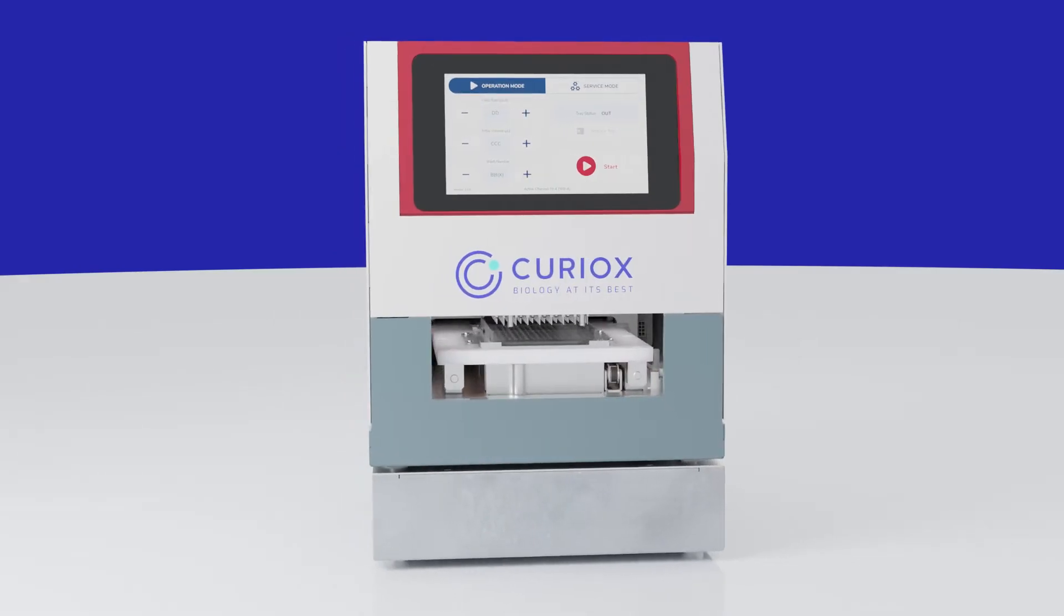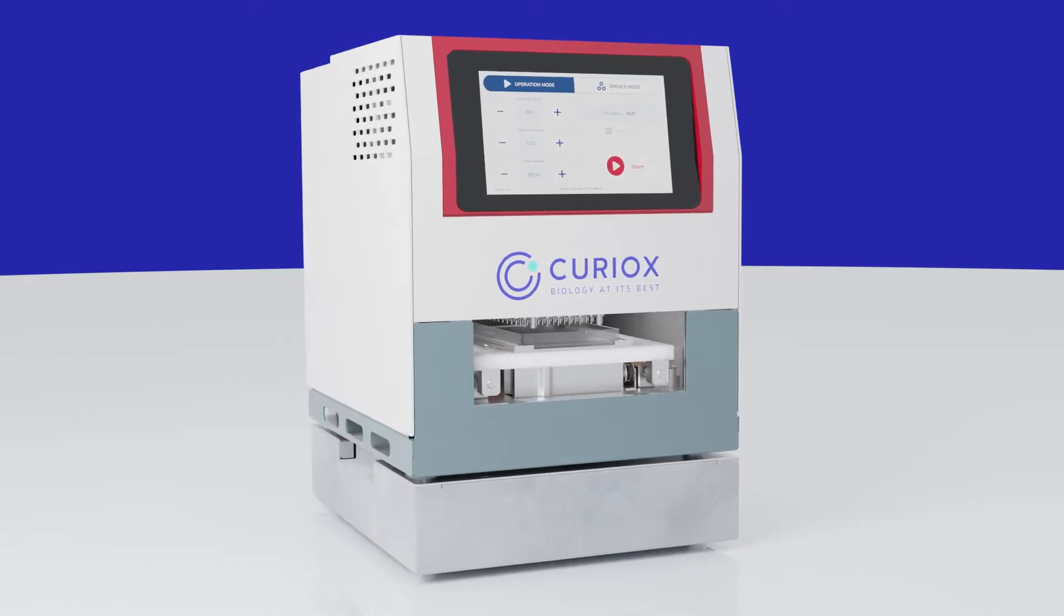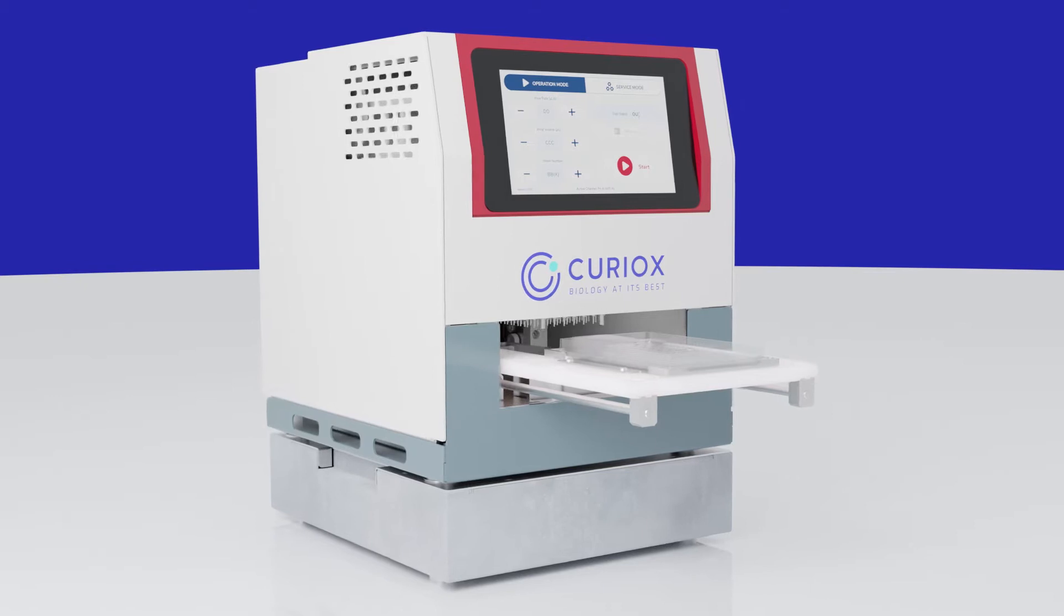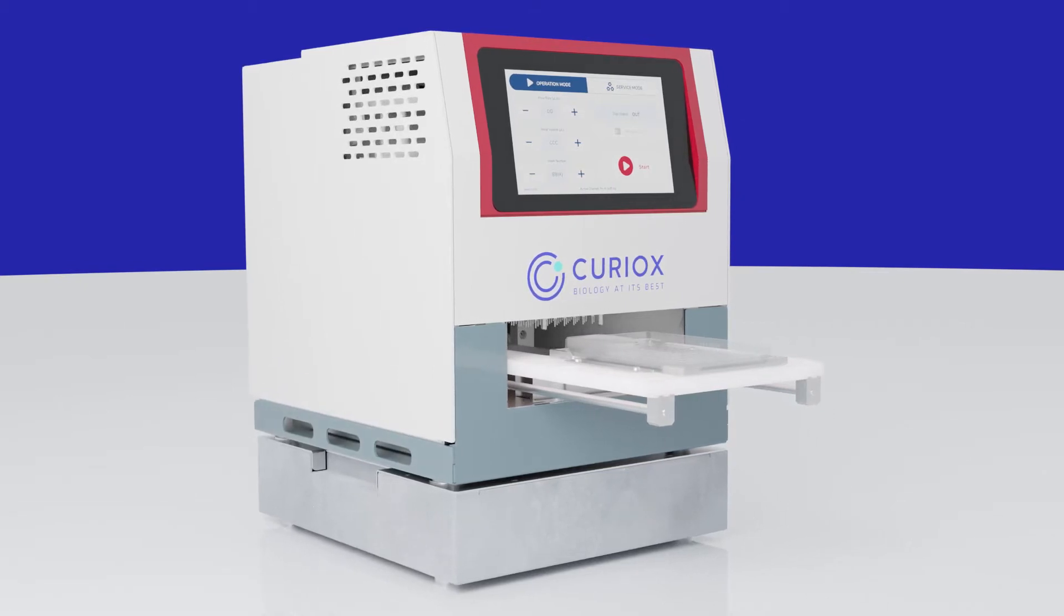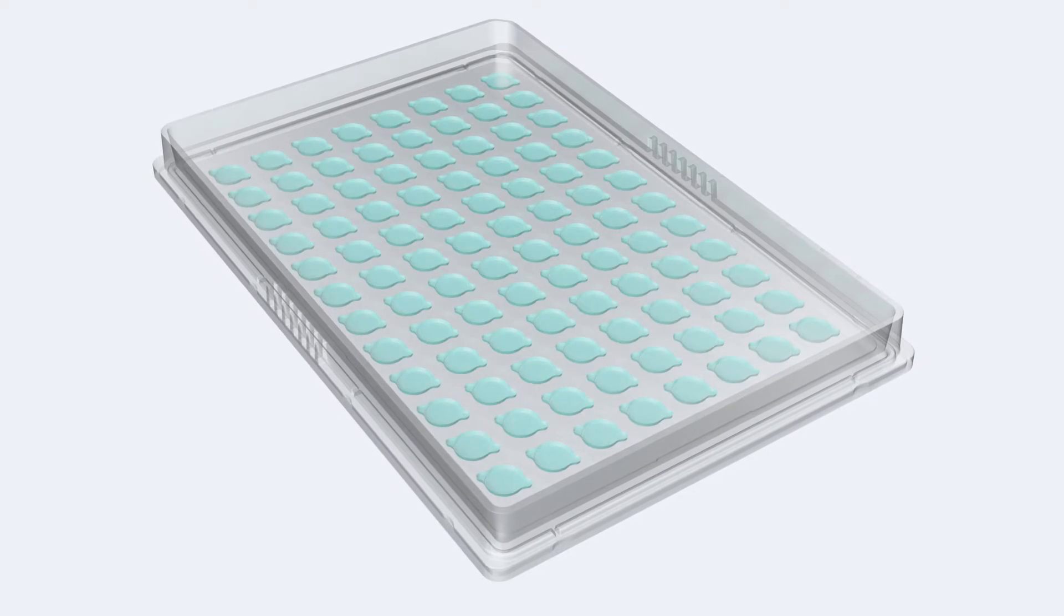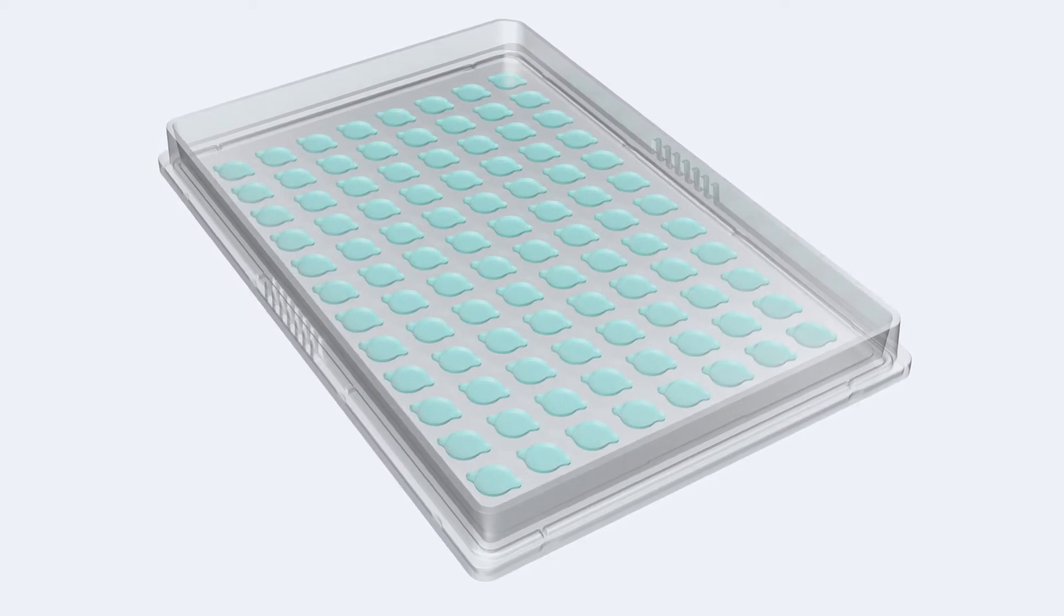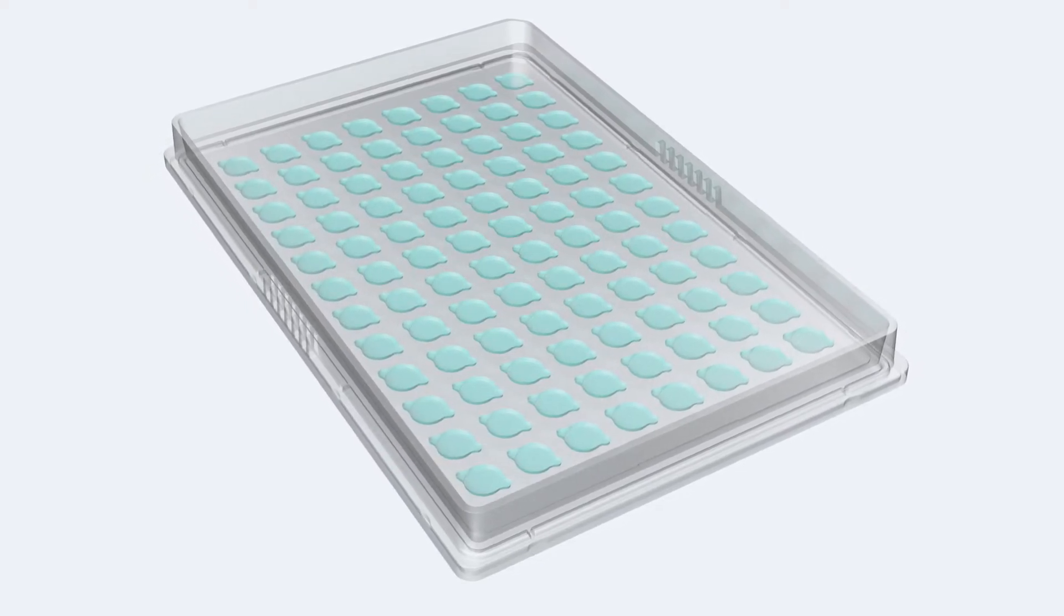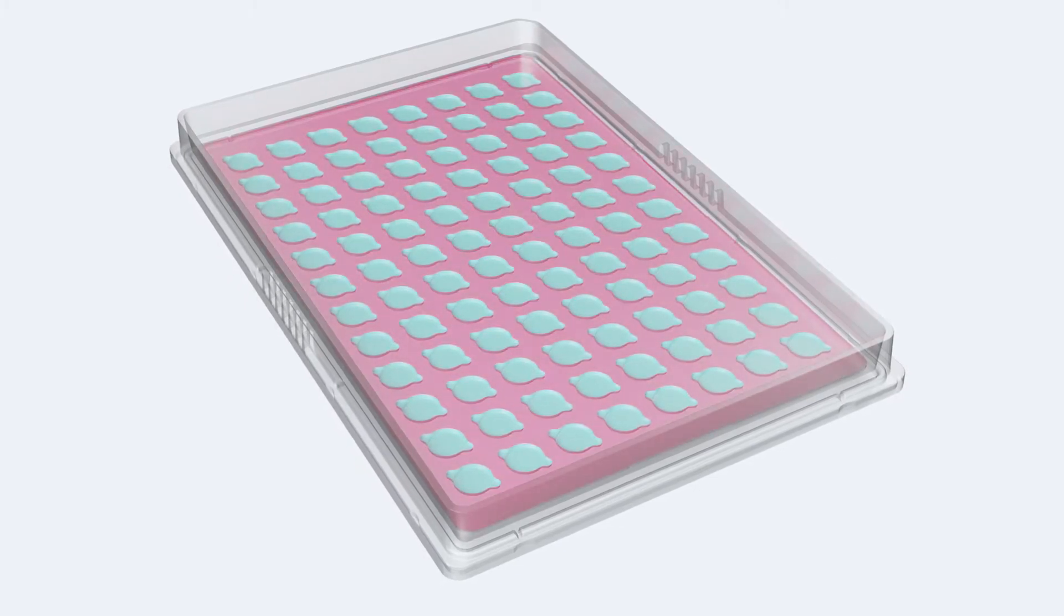The automated laminar wash system by Curiox offers a standardized way to wash cells without centrifugation. Wells on the laminar wash plate have a hydrophilic surface inside low-profile walls, including two smaller satellite areas, and are separated by a proprietary hydrophobic surface.